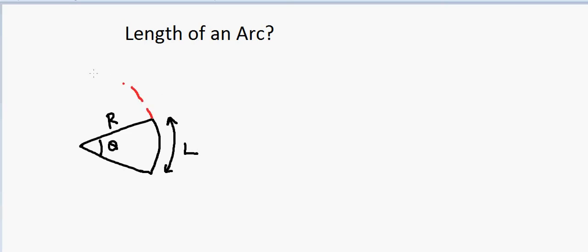So if I draw a circle like this, then I know that the perimeter of this circle is equal to 2πr, right? Because this is a whole circle, I know that this whole angle is 360 degrees.